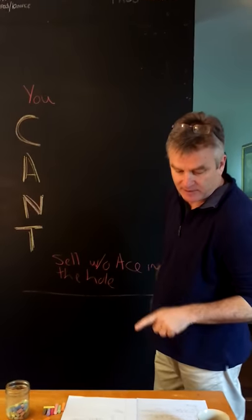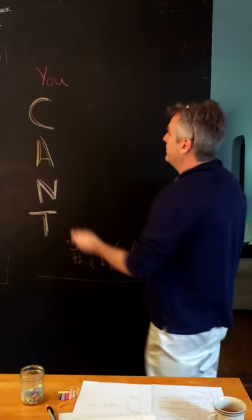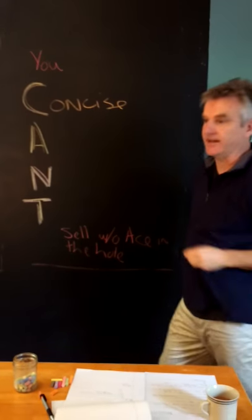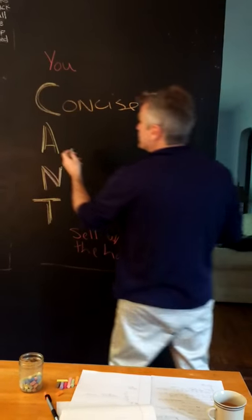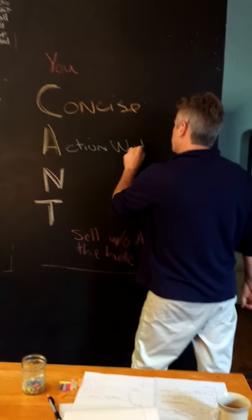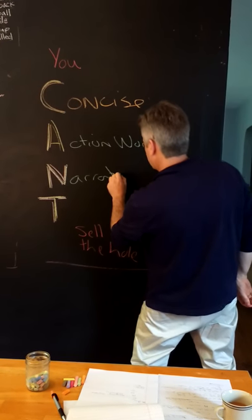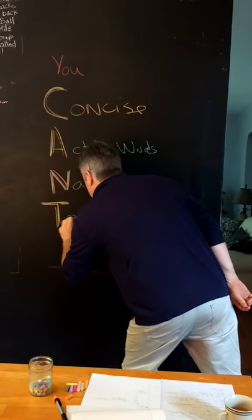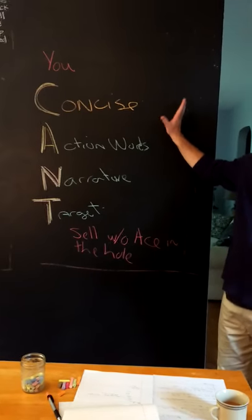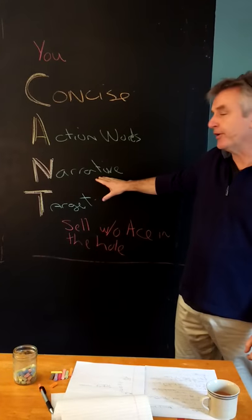So those are kind of the key elements of what you need to do to effectively sell. So when I'm looking at how much time did that take me, the first one is you need to be concise. Under 60 seconds is all you need to make a sale. The second part is action words. The third one is narrative. The fourth is target. So 30 to 60 seconds is all you need. Action words. I'm going to come back to that. Narrative is a good story.